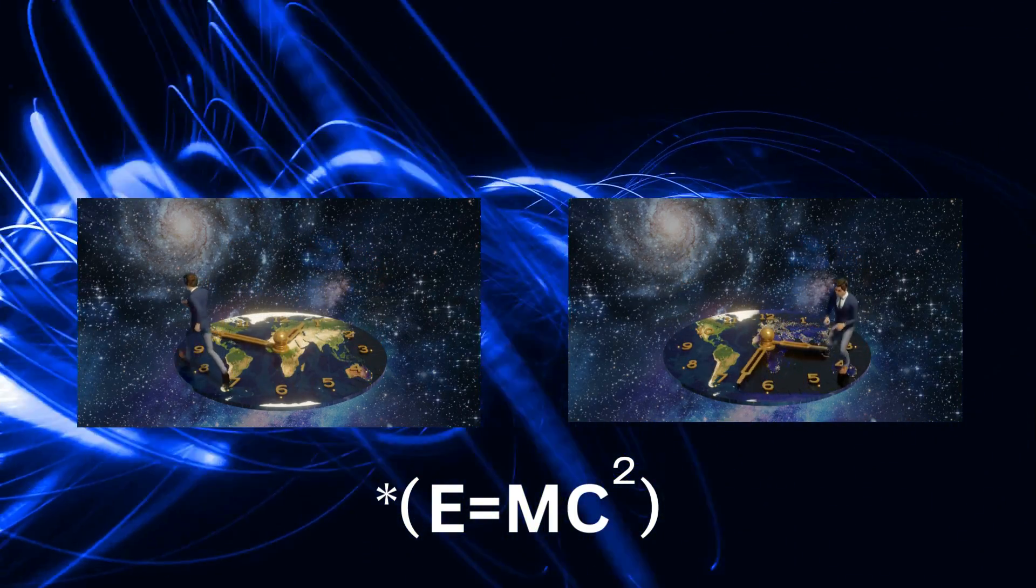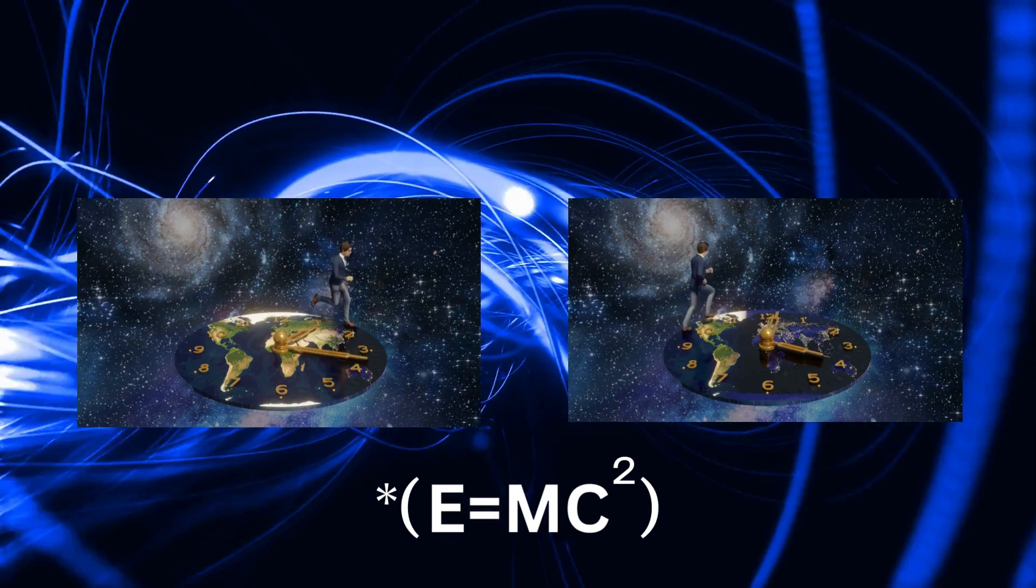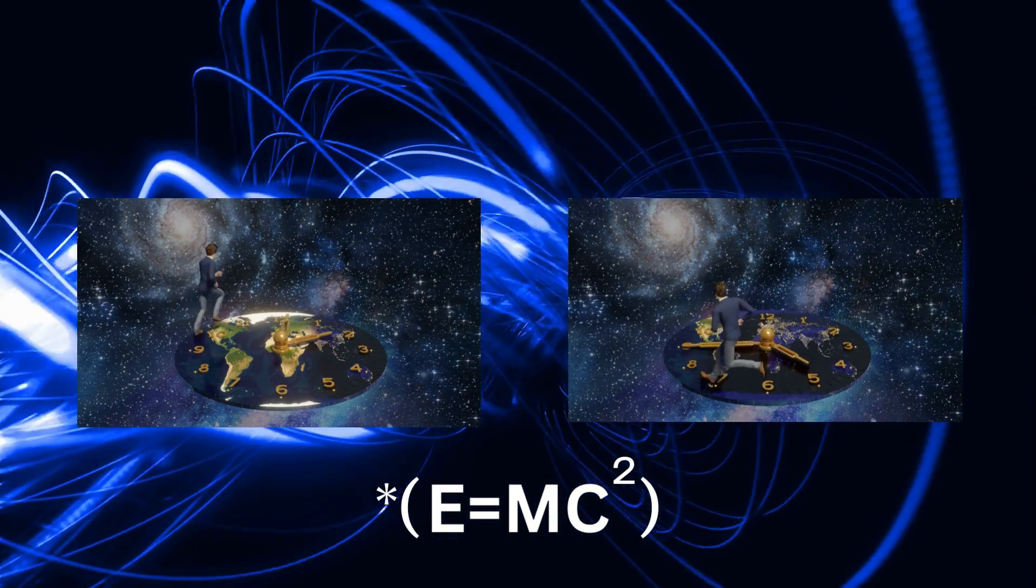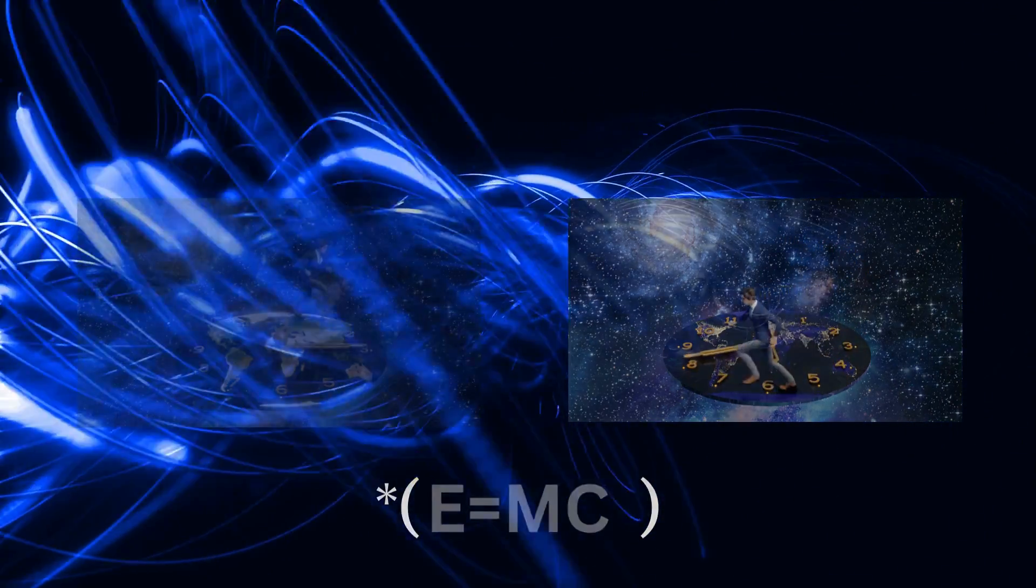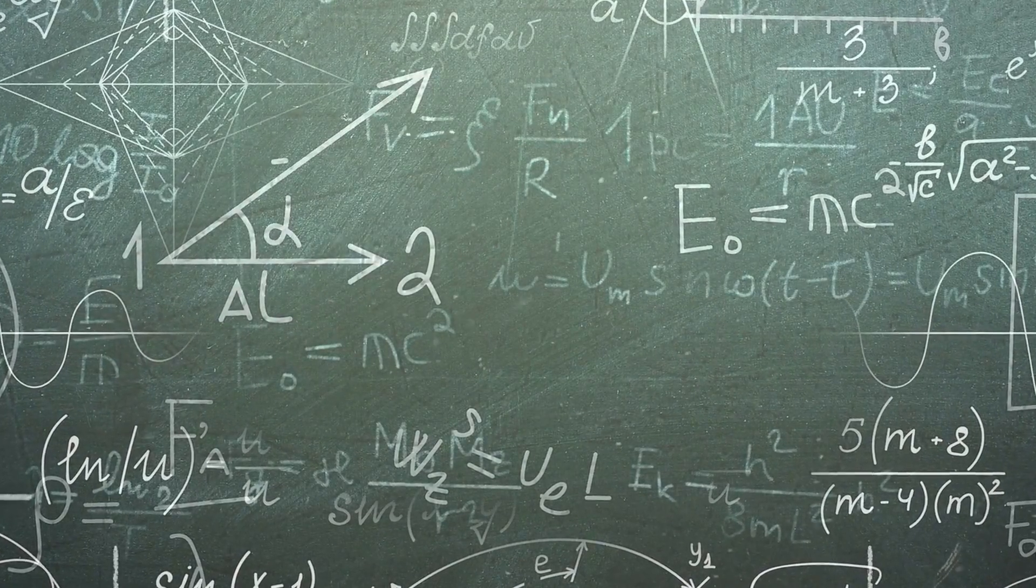Mass and energy are equivalent. The famous equation E=mc² shows that mass can be converted into energy and vice versa. This means that energy has mass, and mass has energy.